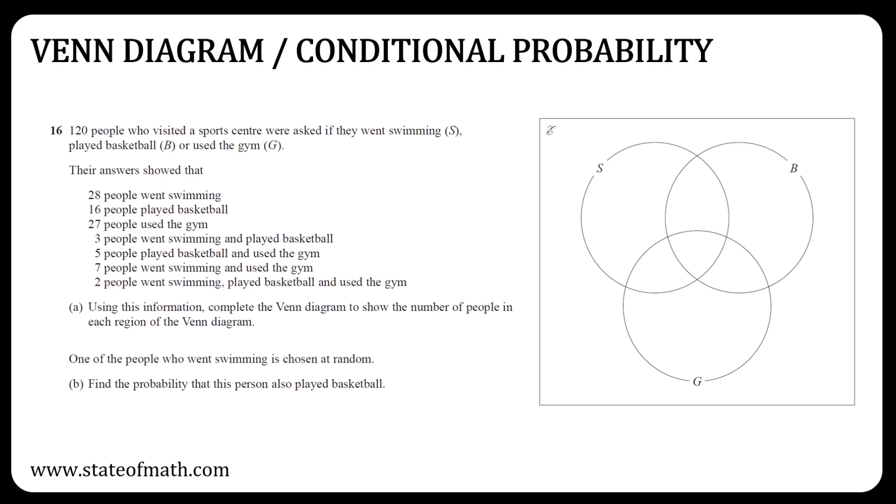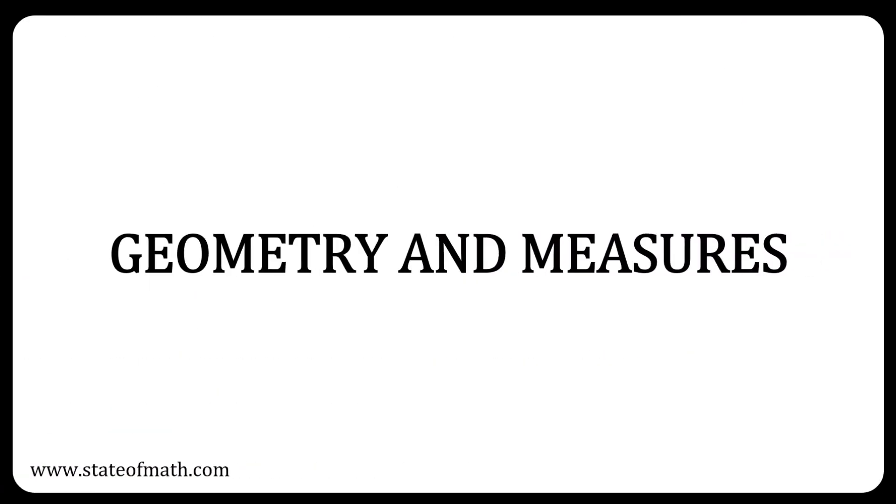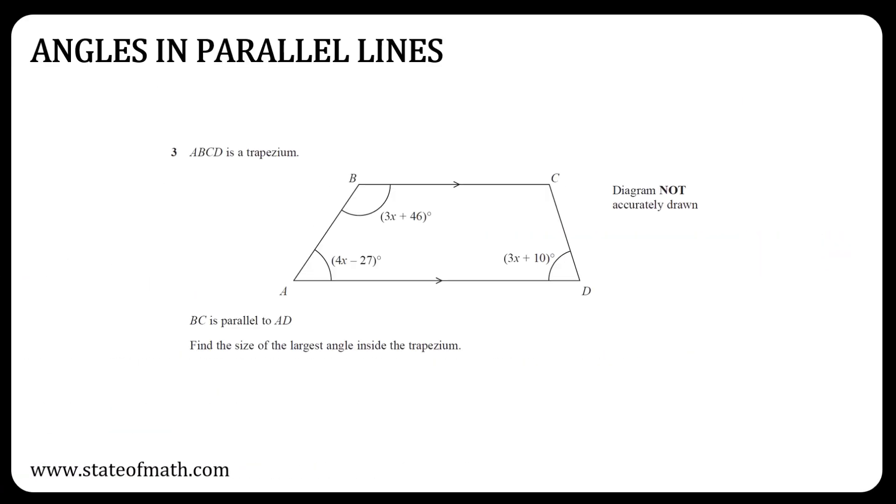Although in Paper 1H there was a tree diagram question and a probability word problem, you could be given a two-mark part of a question on conditional probability. If the setter of the exam paper is a real fan of probability, they can even include a question asking you to find the expected number of an event happening. Extreme, but not impossible. Finally, geometry and measures.